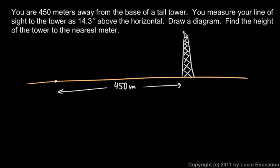You measure your line of sight to the tower as 14.3 degrees above the horizontal. So from this position, if you look at the top of the tower that way, you get a 14.3 degree angle between the ground and your line of sight. So this angle is 14.3 degrees.